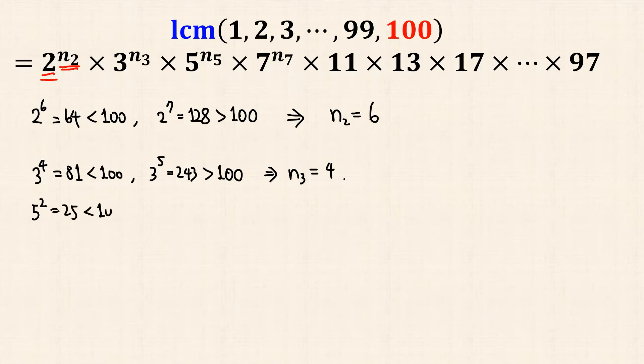If we do with 5, we can see that 5 cubed becomes greater than 100, hence n5 is 2. And with 7, we can see that n7 is also 2.